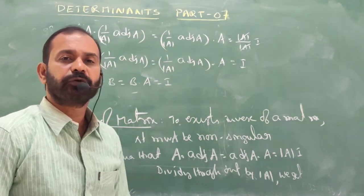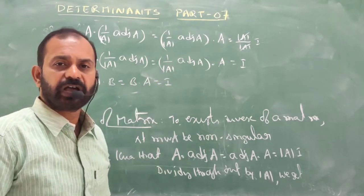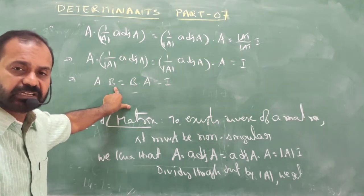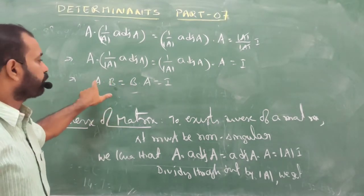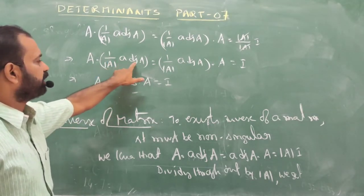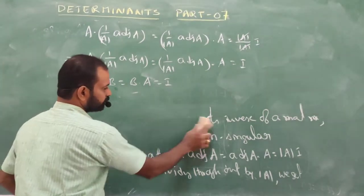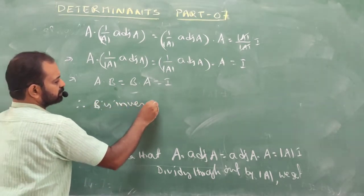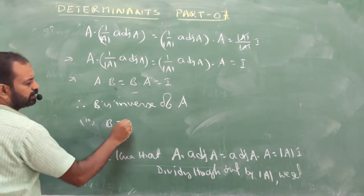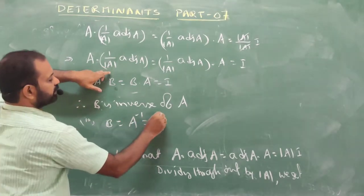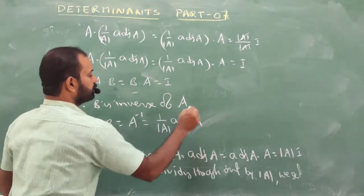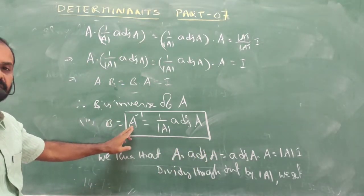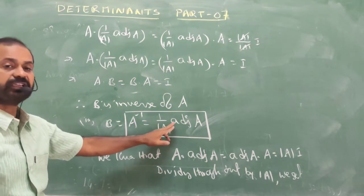From the last chapter, we know that if A·B = B·A = I, then A is called an invertible matrix and B is the inverse of A. So B equals A inverse, which equals (1/|A|) times adjoint A. Therefore, A inverse = (1/|A|) × adjoint A.